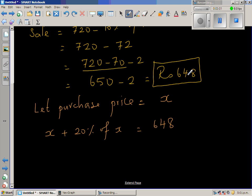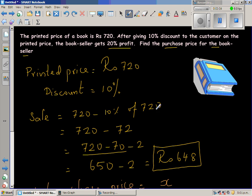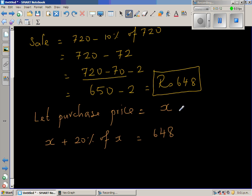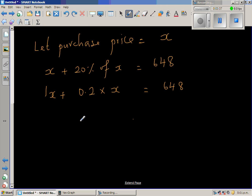This is a simple linear equation. If the purchase price is x, you add 20% of x onto that, you get 648. So I'll write x as 1x. And 20% is 0.2, of means times, so 0.2 times x equals 648. So 1x plus 0.2x is 1.2x equals 648.